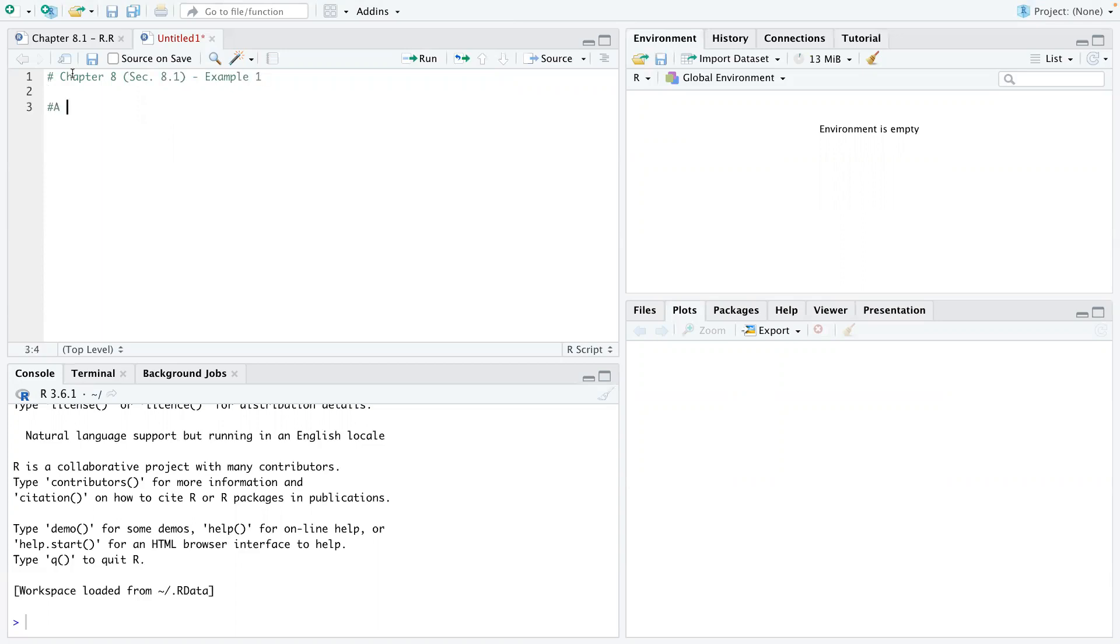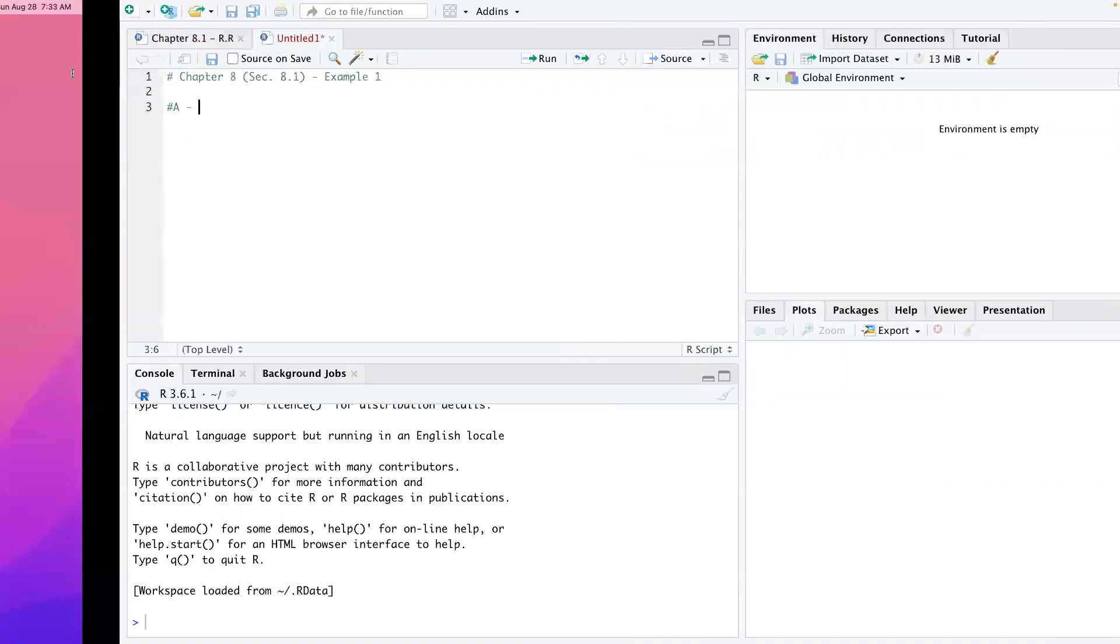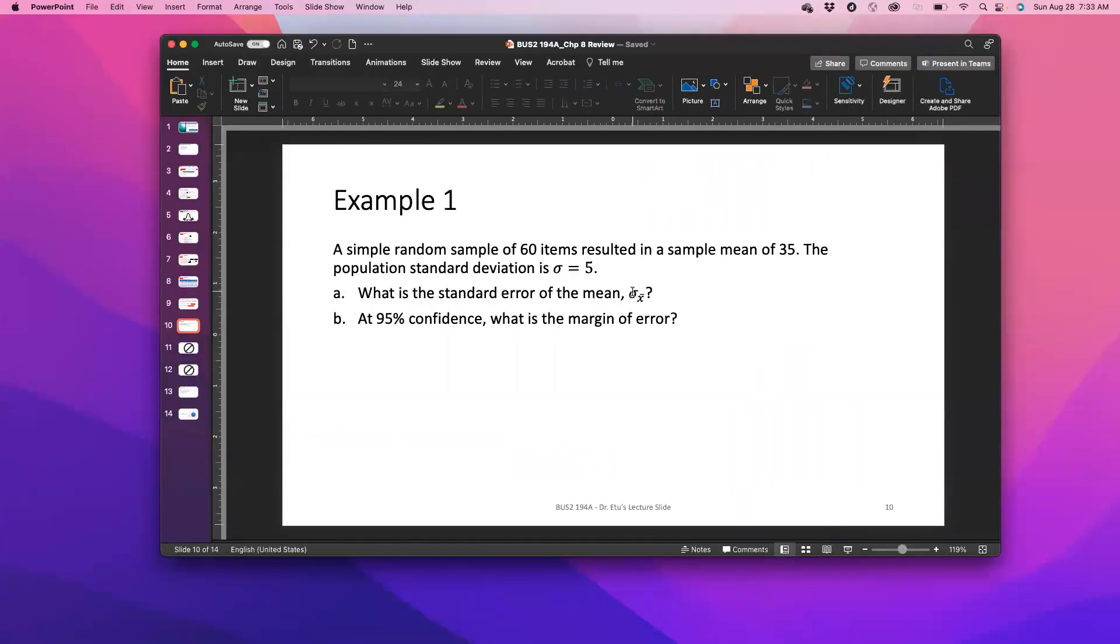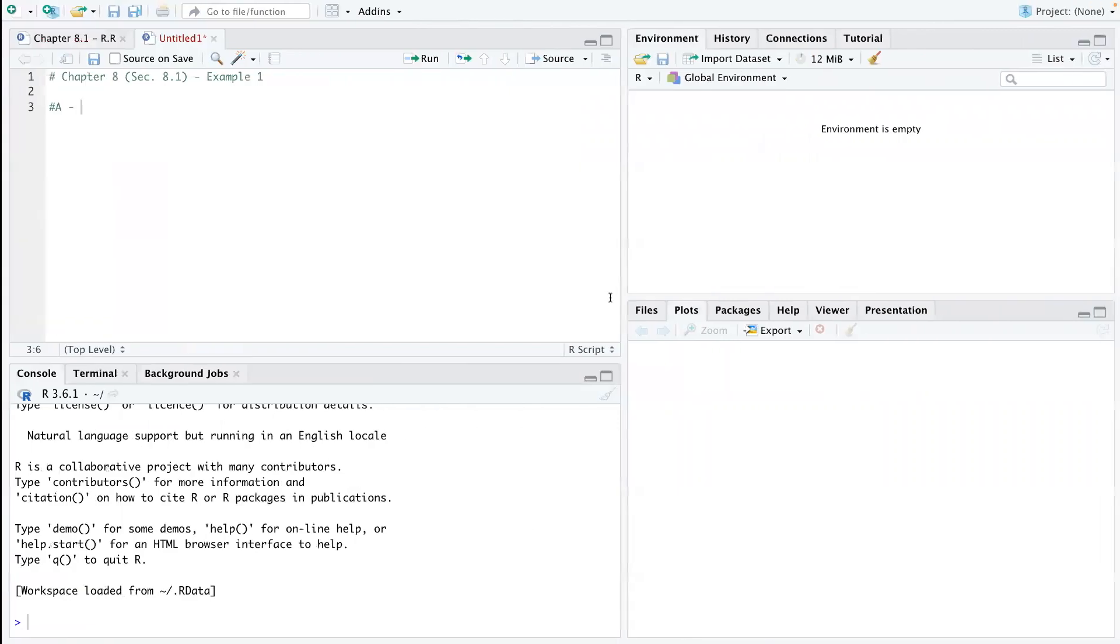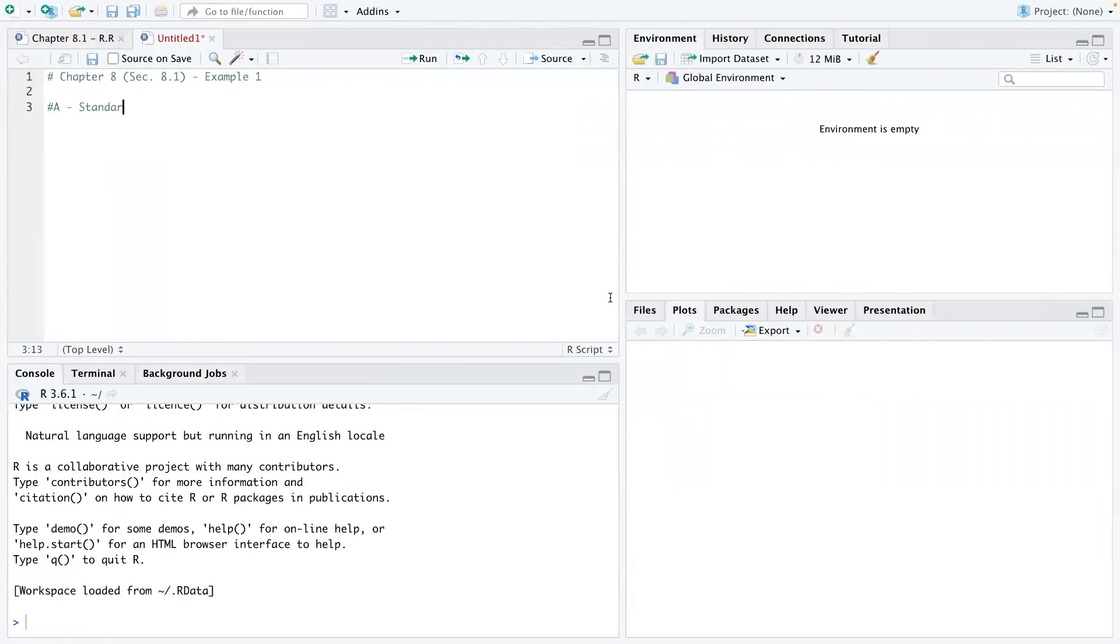So the first thing we have to do is, the question says, define the standard error of the mean, right? So I'm going to write that down. Then what I want you guys to do is to list out the parameters.